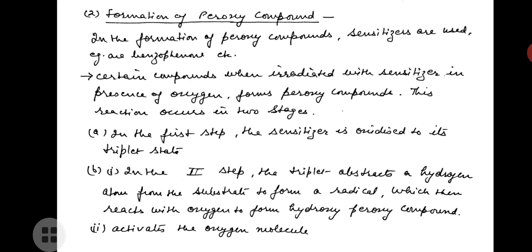There will be two modes — B-first and B-second — in which the reaction can take place. In B-first mode, in the second step, the triplet abstracts a hydrogen atom from the substrate to form a radical, which then reacts with oxygen to form a hydroxy peroxy compound. In B-second mode, it activates the oxygen molecule. Now let us study the examples of each mode.